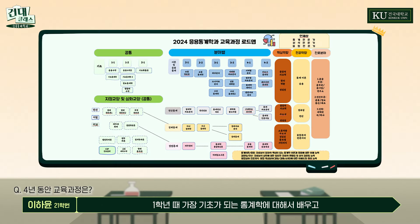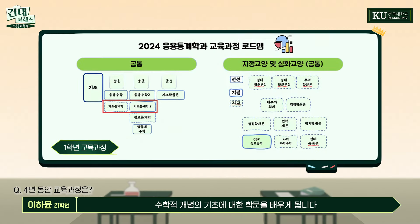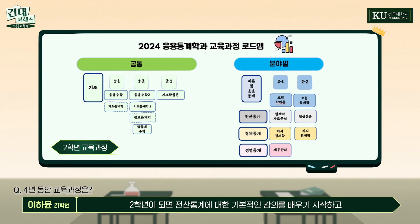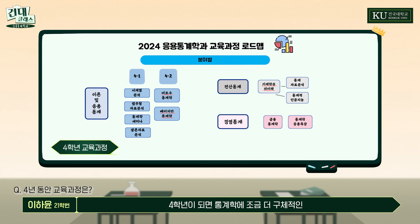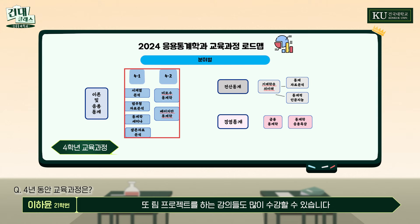동국대학교 응용통계학과는 1학년 때 가장 기초가 되는 통계학과 수학적 개념의 기초에 대한 학문을 배우게 됩니다. 2학년이 되면 전산통계에 대한 기본적인 강의들을 배우기 시작하고, 3학년이 되면 수리통계학, 회귀분석과 같은 통계학의 꽃이라고 할 수 있는 강의들을 배우게 됩니다. 4학년이 되면 통계학의 더 구체적인 이론들과 팀 프로젝트 강의들도 많이 수강할 수 있습니다.